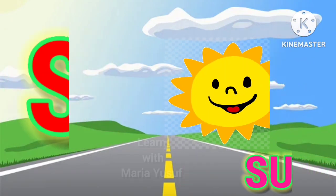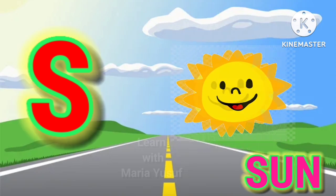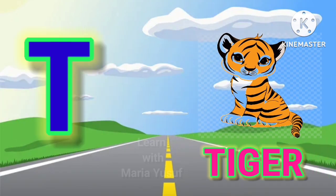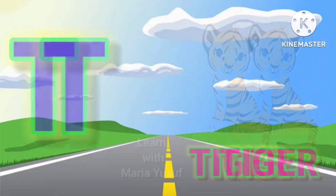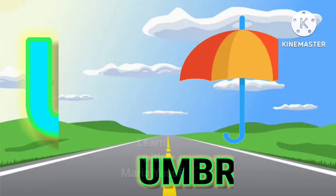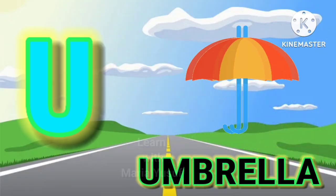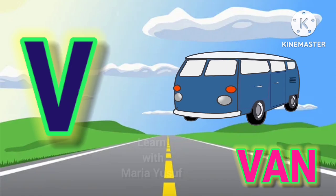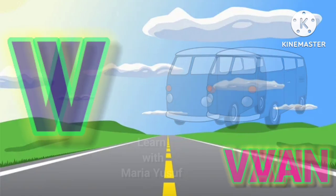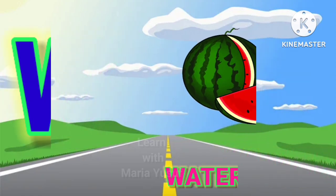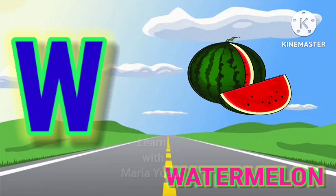S for Sun, T for Tiger, U for Umbrella, V for Van, W for Watermelon.